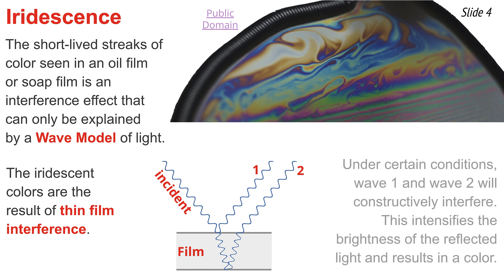Under certain conditions, which we will talk about, and for a specific wavelength, wave 1 and 2 will undergo constructive interference. This intensifies the brightness of the color that's associated with that wavelength, allowing us to see one color when we look at that specific location on the film.